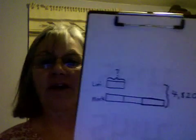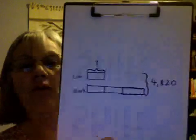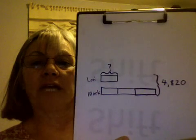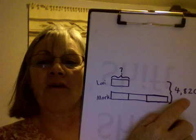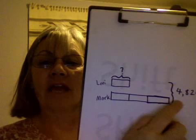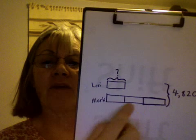I'll tell the joke now, and then after the last problem, I'll tell you the answer. So, the question is: which animal can you never trust? Think about that while we show one more bar modeling problem for division. In this problem, we've got Lori and Mark. We don't know how many Lori has of the 4,820, but we know that Mark has that amount three equal times. These bars represent equal parts — just remember that when we're using bar models for division.